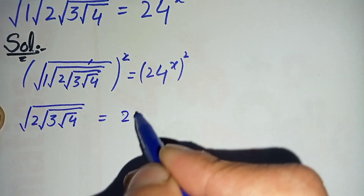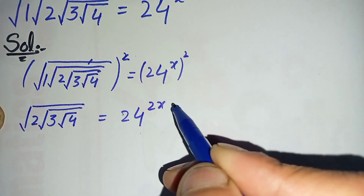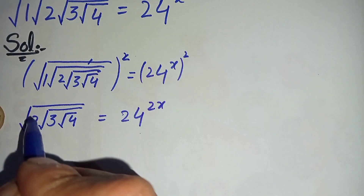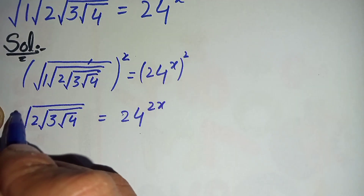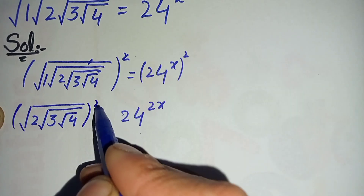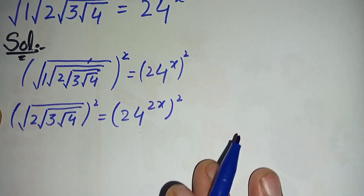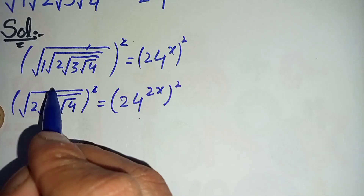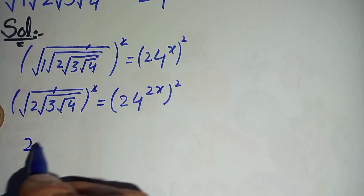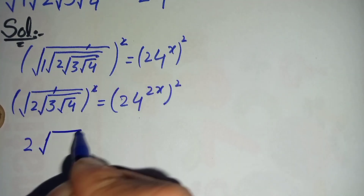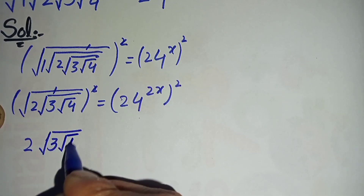This is equal to 24 raised to power 2x. Now next, again we will take square on both sides to eliminate this one square root. So after squaring, this square and square root will be cancelled, leaving only 2 times square root of 3 times square root of 4 on the left-hand side.